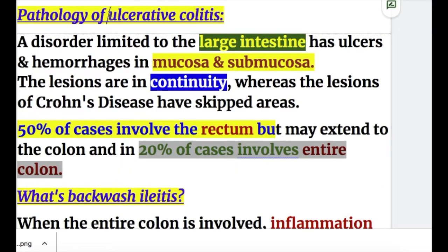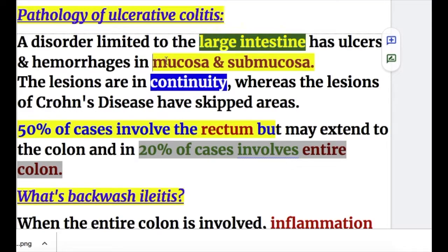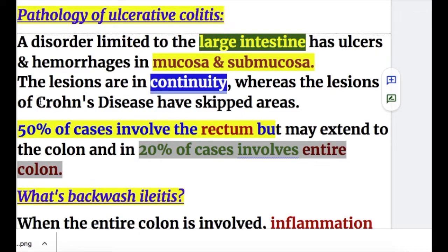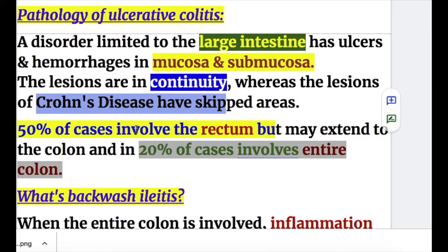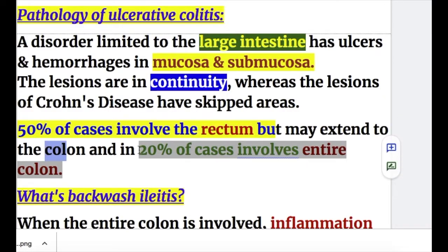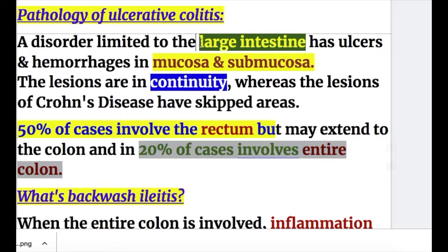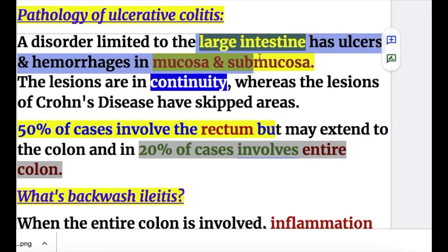Now the pathology of ulcerative colitis. It is a disorder limited to the large intestine and has ulcers and hemorrhages in the mucosa and submucosa. The lesions are in continuity, whereas the lesions of Crohn's disease have skipped areas. Now 50% of cases of ulcerative colitis involve the rectum, but it may extend to the colon, and in 20% of cases the entire colon is involved. Ulcerative colitis involves the mucosa and submucosa.